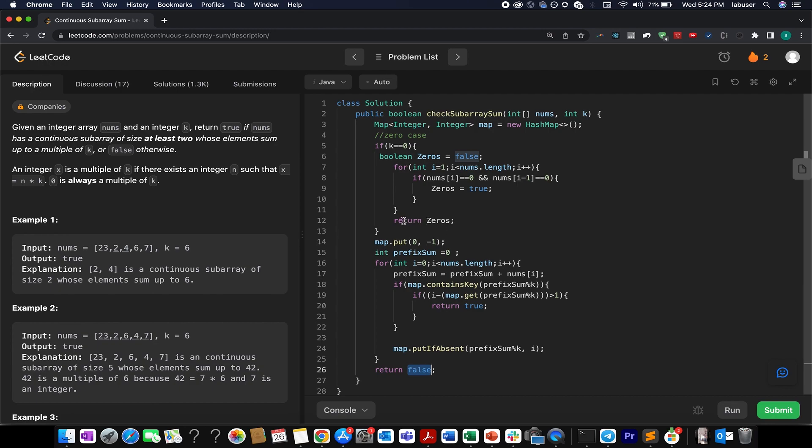Now let's talk about few corner cases. Why I am putting into the map 0 comma minus 1 over here? That simply means that the remainder 0 occurs at minus 1 index.